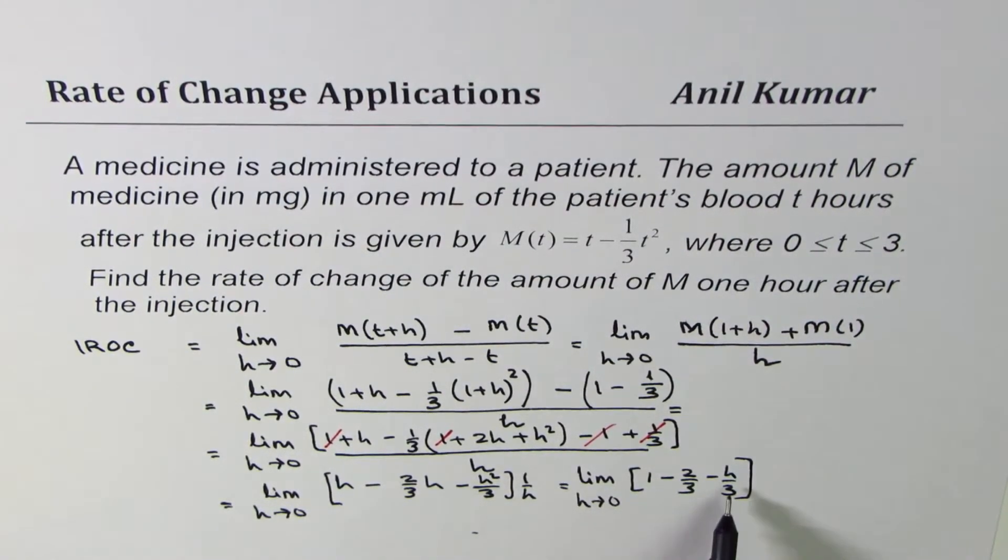Now if h is 0, then this expression can be written as 1 - 2/3, which is (3-2)/3, right? Which is 3-2 over 3, or 1/3. Is it okay?